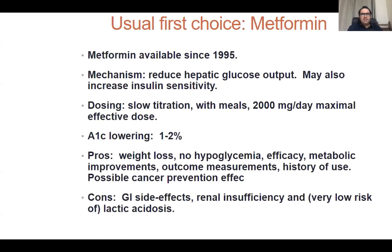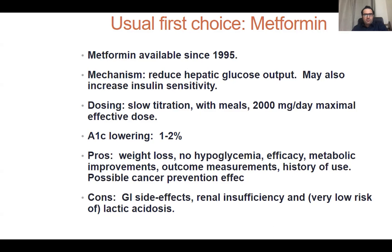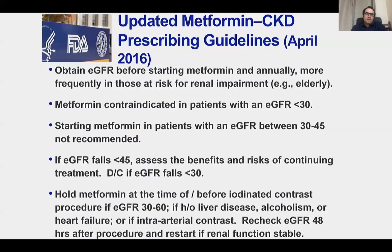These are the groups of type 2 diabetes medications. The first choice is metformin, available since 1995. It reduces hepatic glucose output and may also increase insulin sensitivity. We start with a low dose and titrate slowly up to 2 grams per day maximum effective dose. It has a good A1C-lowering effect, potential weight loss, no hypoglycemia, and is a cheaper drug, making it the drug of choice. GI side effects are minimal if started at low dose. In renal insufficiency, we avoid it because of lactic acidosis — GFR should be above 45 before initiating.